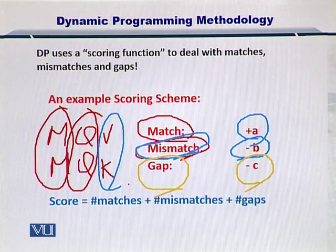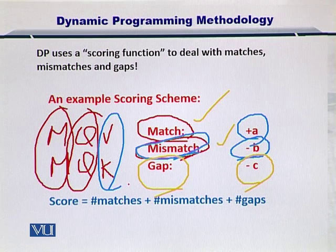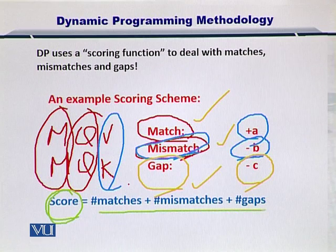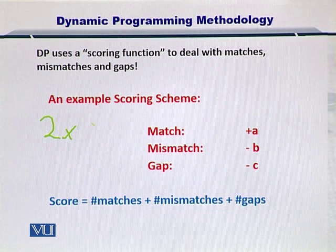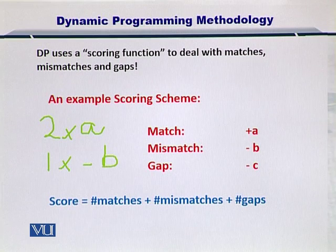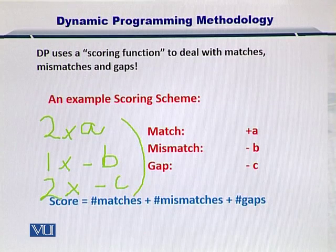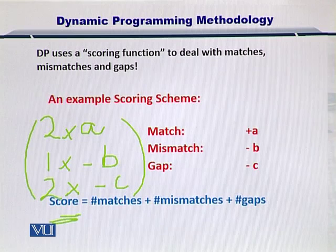So the scoring scheme for dynamic programming is based on three scoring elements: the match, the mismatch, and the gap. The overall score is defined by the sum of matches, mismatches, and gaps. For example, if you have two matches, your score will be 2 multiplied by A. If you have one mismatch, that is 1 multiplied by minus B. And if you have two gaps, that is 2 multiplied by minus C. You sum all of that up, and this will be your overall score for the alignment. You compute the score for all possible combinations of these alignments and choose the maximal score.